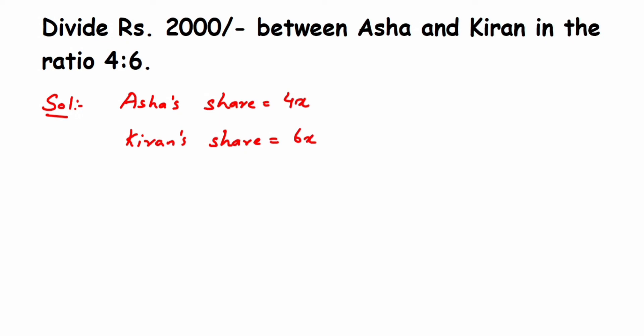Whenever ratios are given, we introduce a variable and write in the form of 4x or 6x like that. Now since they are dividing the amount 2000 in these two ratios, if I add 4x and 6x it will be equal to 2000 rupees. So 4x plus 6x — that is the share of Asha and the share of Kiran — when added together will be equal to 2000.